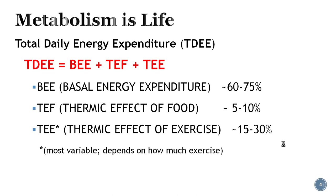Metabolism is life. We take energy from the sun by eating food, convert it into ATP, use it for energy, and that cycle continues until we die. We're going to focus on how many calories we spend during a given day — that's called total daily energy expenditure — and there are three components: basal energy expenditure, the thermic effect of food (TEF), and the thermic effect of exercise, which is the most variable because it depends on how much exercise you do each day.